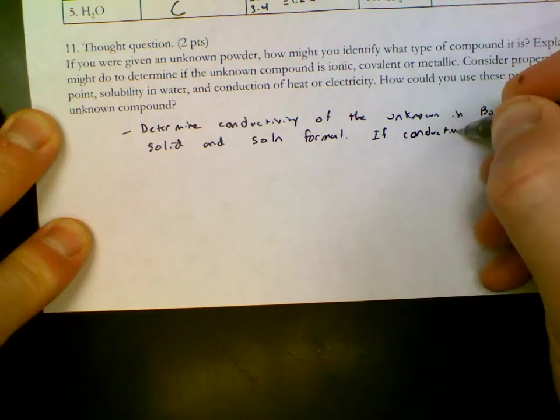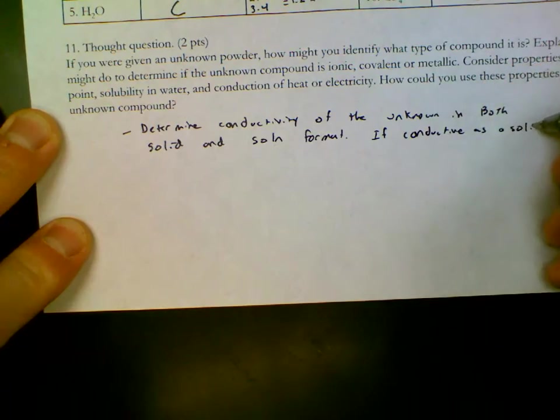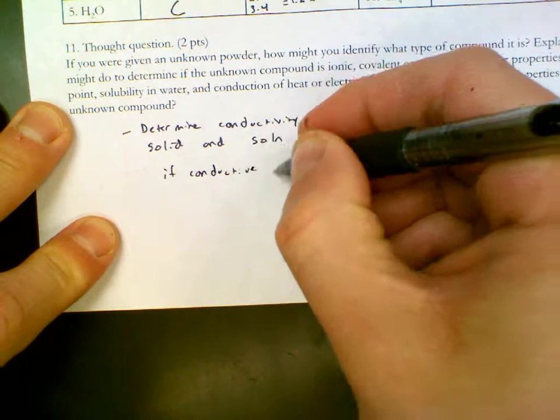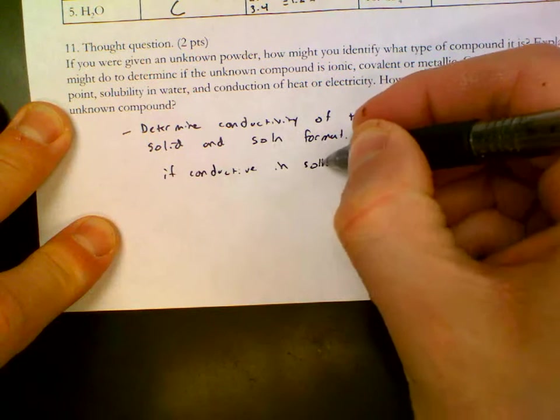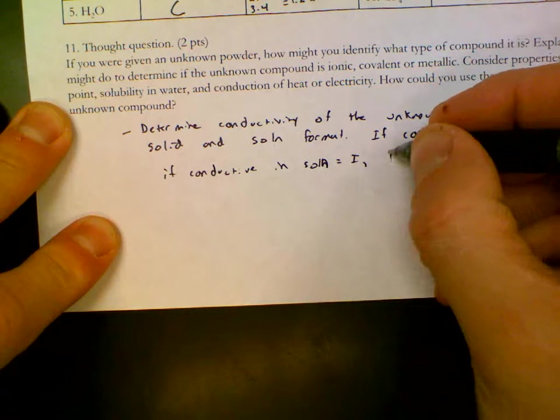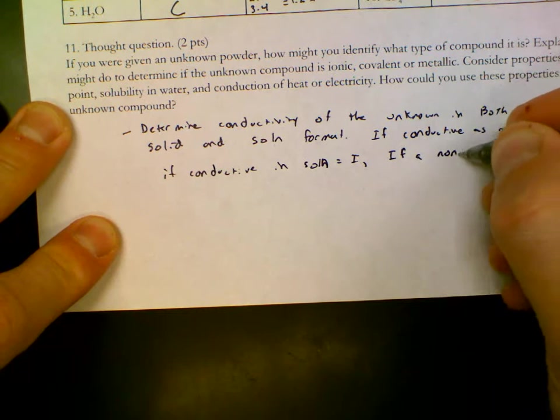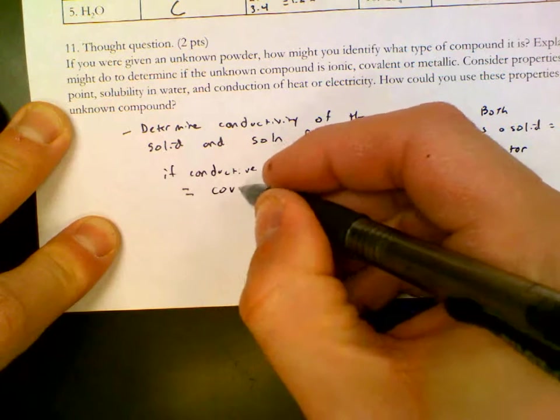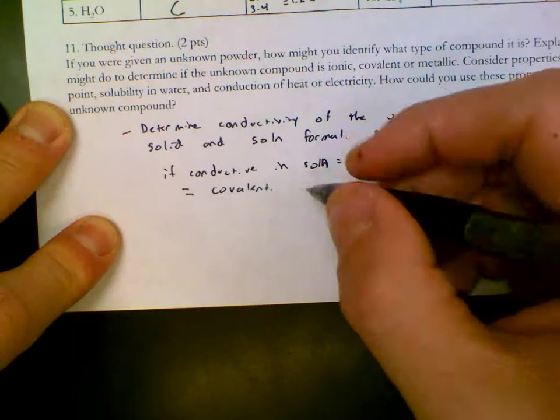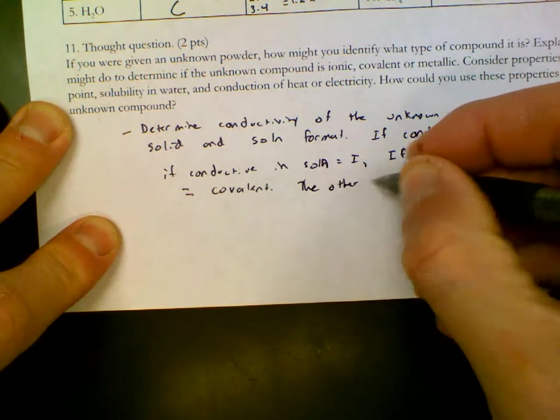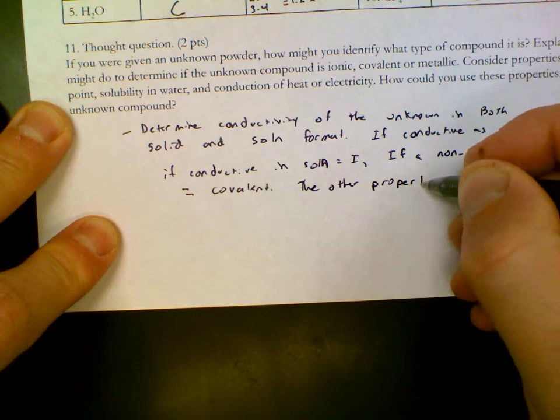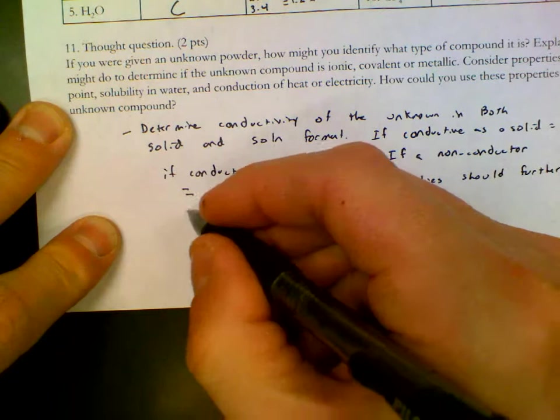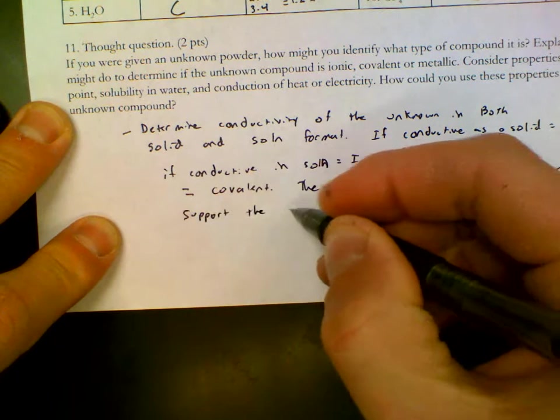If conductive as a solid, it's going to be metallic. If conductive in solution, that'll be ionic. And lastly, if a non-conductor, that would be covalent. Finally, the other properties should also match up or further support the identification. And there we are.